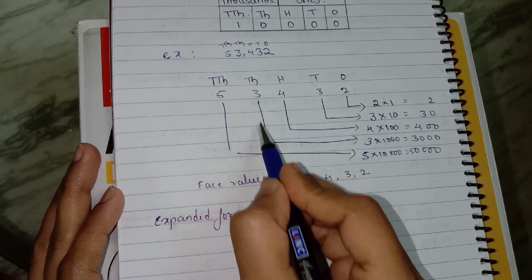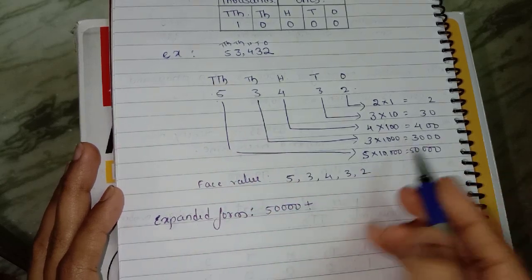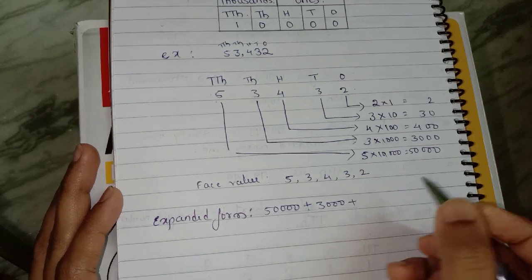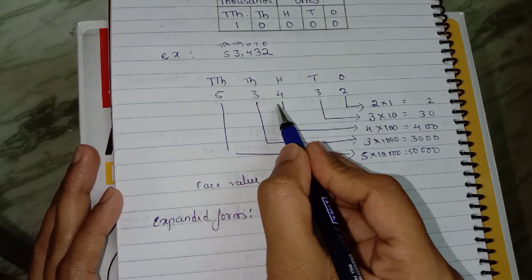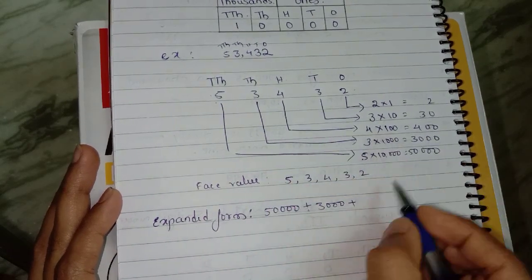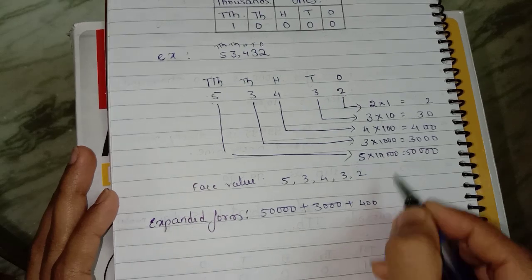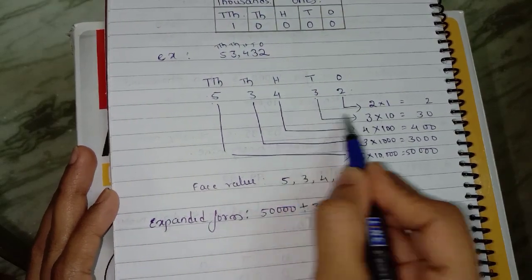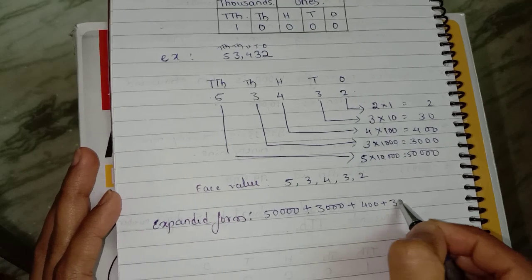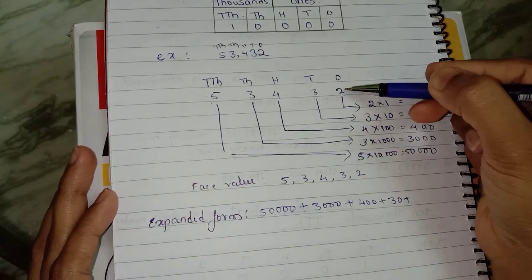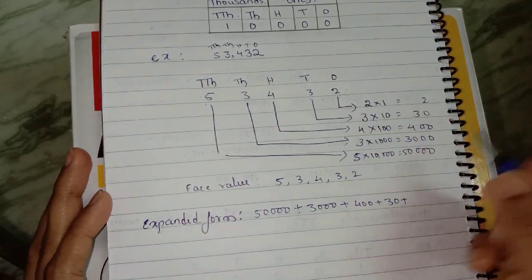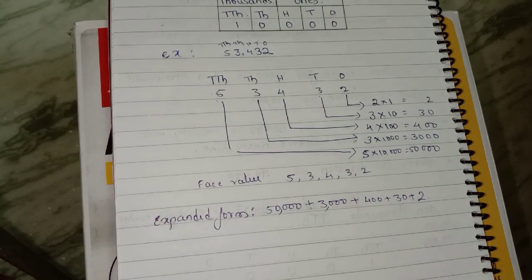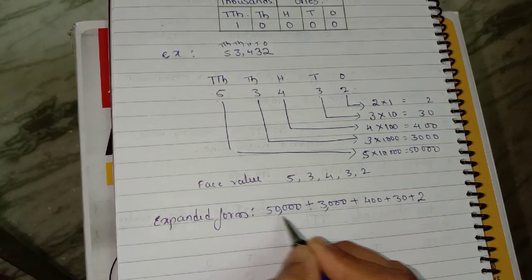So: 50,000 + next digit is 3 and its place value is 3,000 + next digit is 4 and its place value is 400 + next digit is 3 and its place value is 30 + and the last digit is 2 and its place value is 2. Don't forget to put commas.